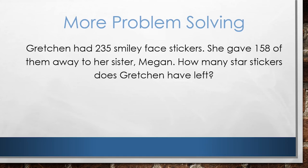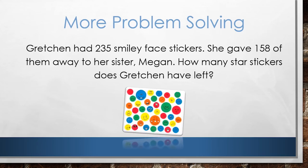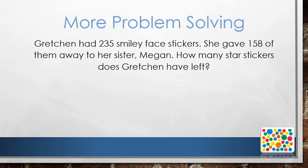Here's another problem for us to solve. Gretchen had 235 smiley face stickers. She gave 158 of them away to her sister Megan. How many stickers does Gretchen have left? Think about what you know and what you want to find out in this problem. Tell someone near you or write down how you think we could solve this problem. I bet you said 235 minus 158 equals blank. That is the equation we could use to represent this problem.